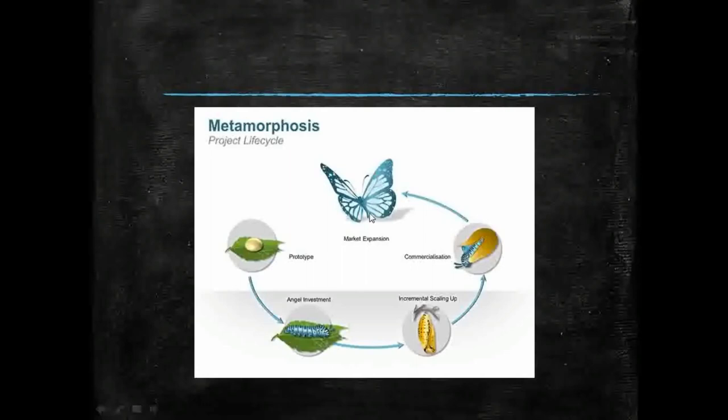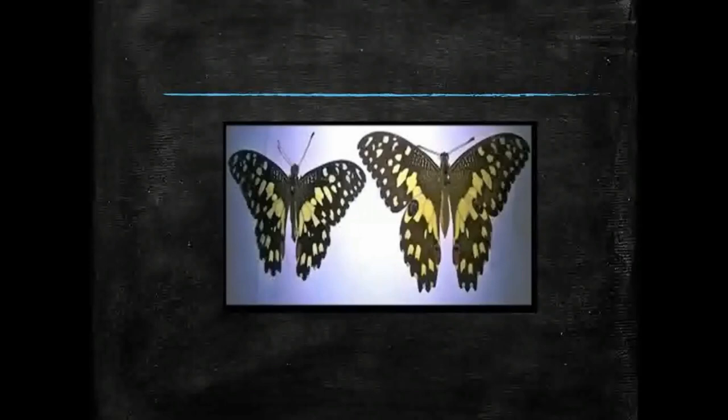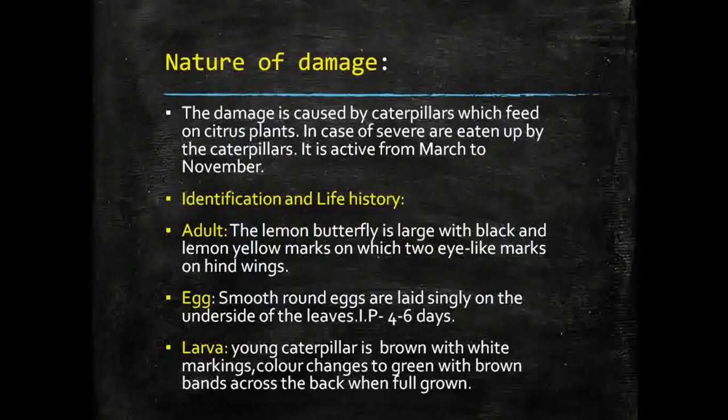The larval stage looks different from the adult. The adult butterfly is completely black in color with yellow spots present on the wings — this is how the adult one looks.